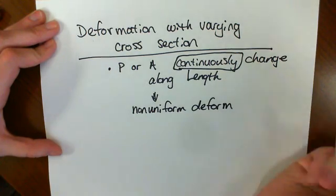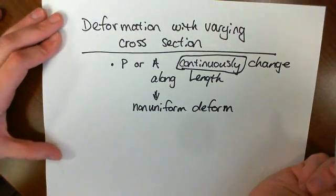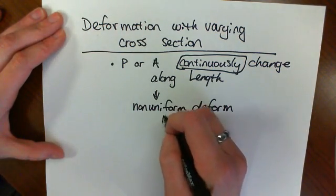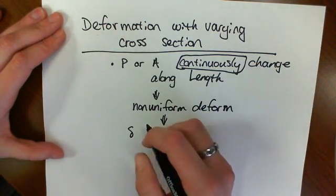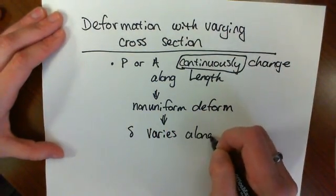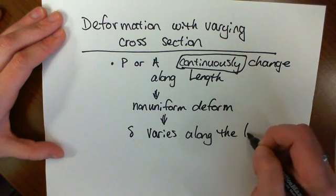Before when we had all those things the same, that meant we had uniform deformation, but now we have non-uniform deformation. So our deformation varies along the length.